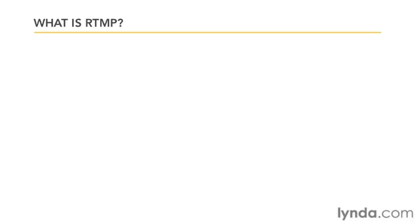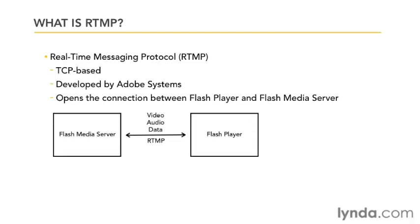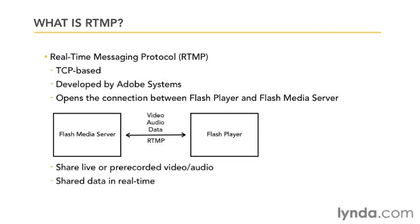The best place to start is with the original Flash Streaming Protocol, RTMP. RTMP stands for Real-Time Messaging Protocol. It's a TCP-based protocol that Adobe developed for streaming audio, video, and data between Flash Media Server and Flash Player. A two-way connection is opened between the two, allowing them to communicate in real-time back and forth. The data they exchange can be pre-recorded or live video and audio, or even data such as text chat or XY coordinates of players in a multiplayer game. RTMP is a great solution to stream media and share data between clients who have Flash Player.